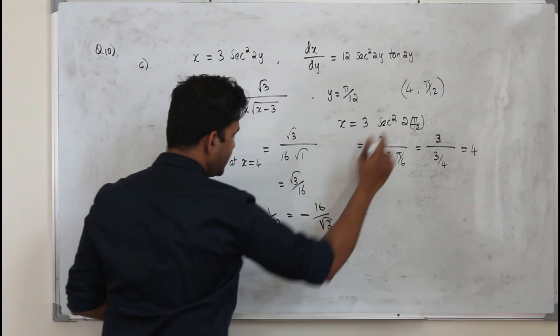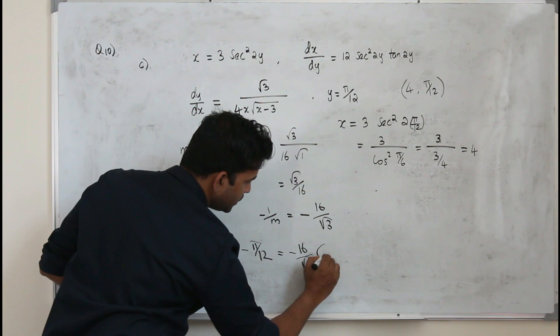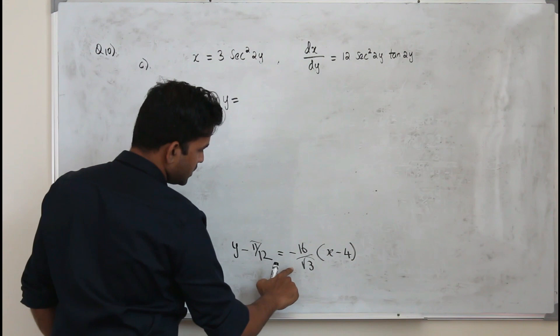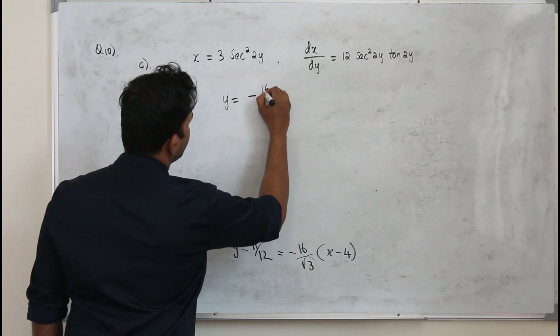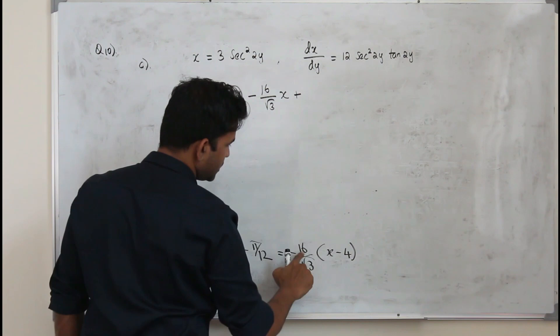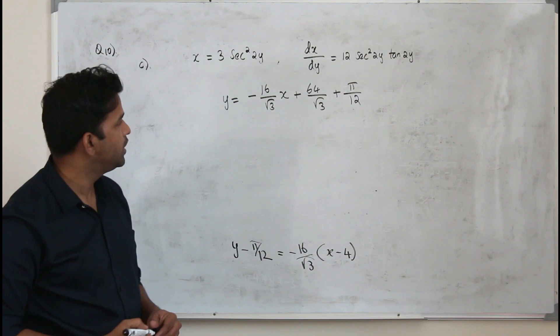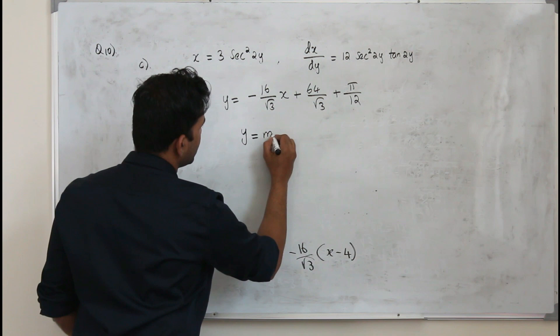The equation of the normal is y − y₁ = slope × (x − x₁), where the slope is −16/√3 and the point is (4, π/12). Simplifying: y = −16/√3 · x + 64/√3 + π/12. This is in the form y = mx + c, where m = −16/√3 and c = 64/√3 + π/12.